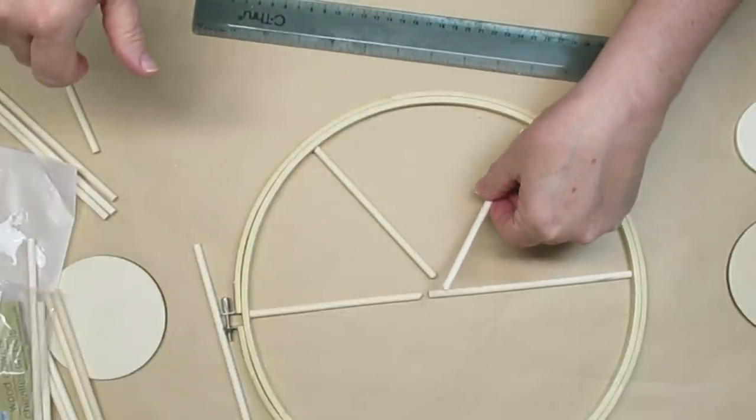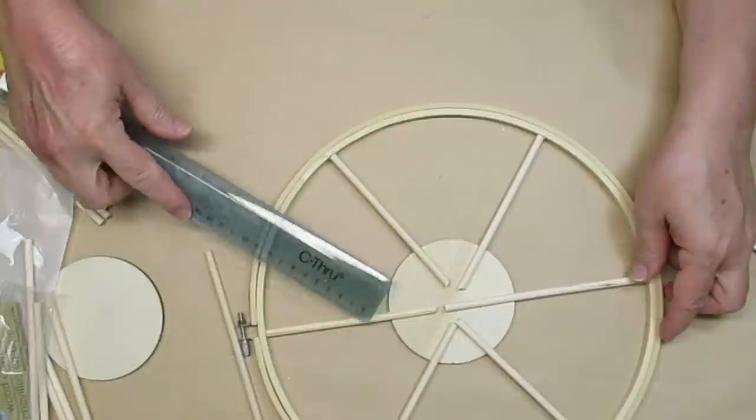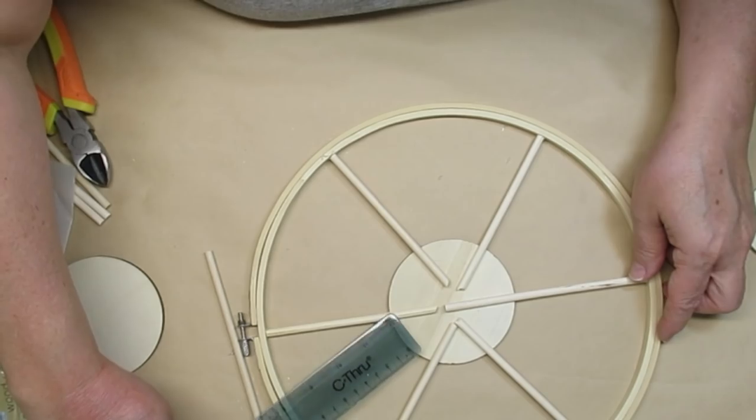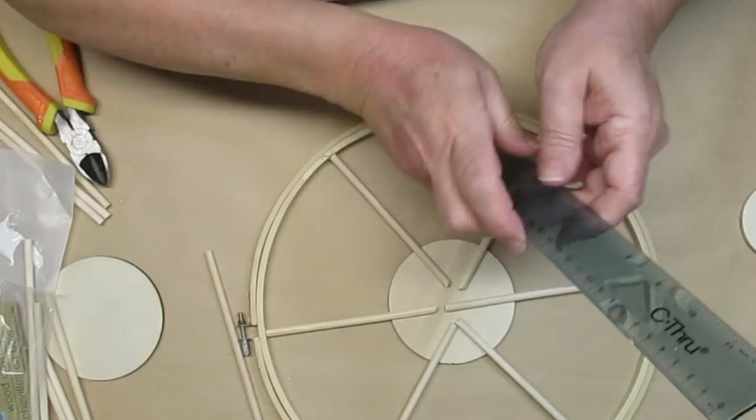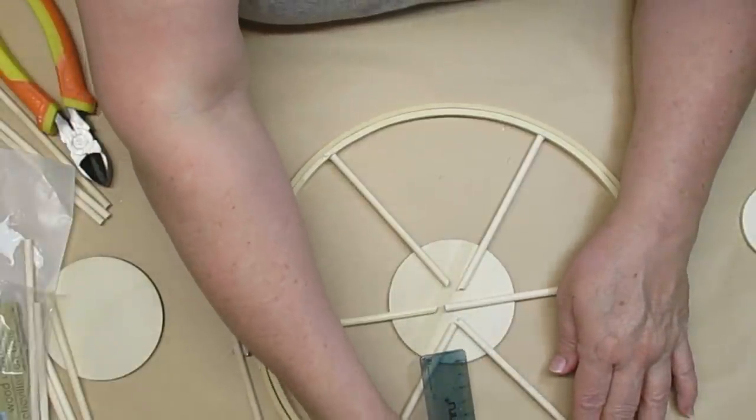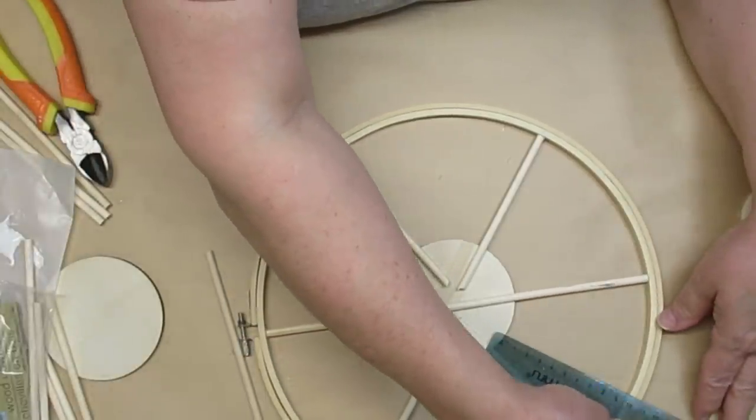Once I have them all together I'm going to take this four-inch wood round that I did pick up at the Dollar Tree in a pack of three, and I'm going to measure to make sure that I have it in the right spot and then use hot glue to glue all of this down really well.